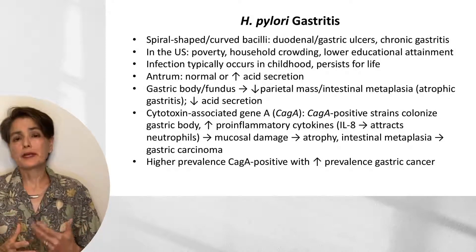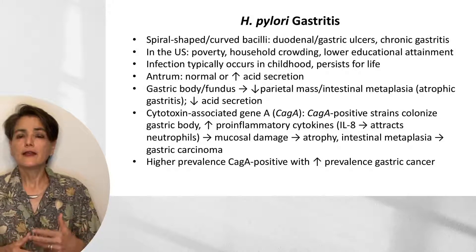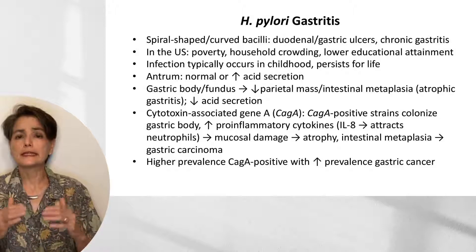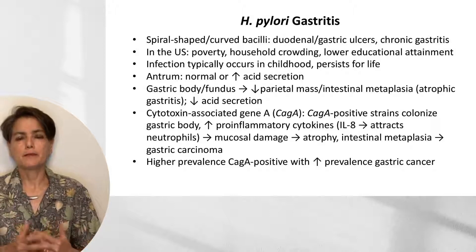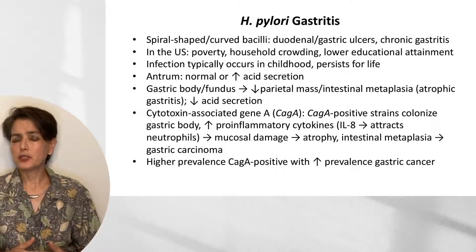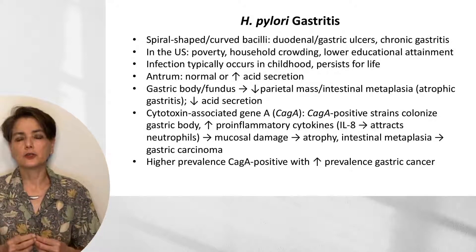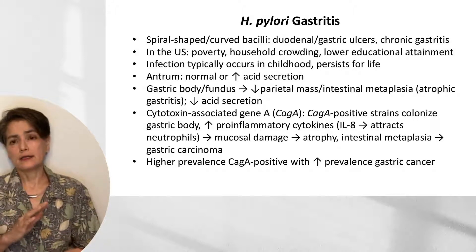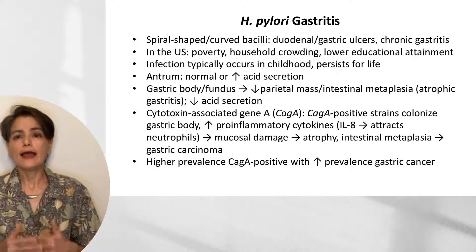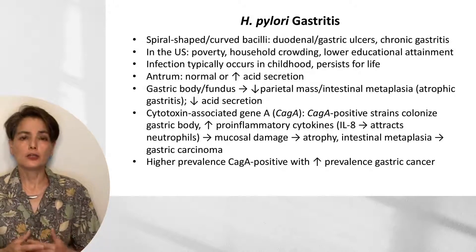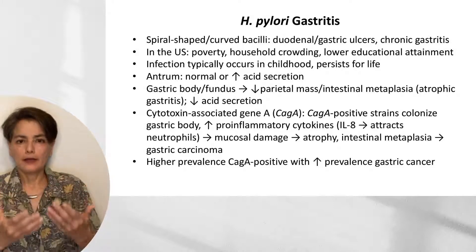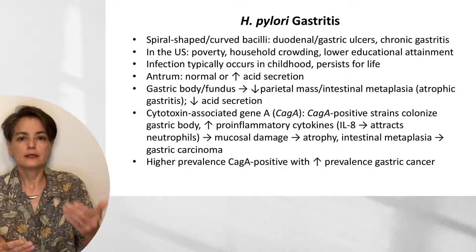If this progresses and becomes chronic, involving the gastric body and fundus, this injury causes loss of parietal cells with a concomitant decrease in acid secretion. With continued injury and repair, we get intestinal metaplasia. This constellation of findings is referred to as atrophic gastritis. Another pathologic feature to keep in mind is cytotoxin-associated gene A, or CAG-A. These strains can be CAG-A positive or negative, and the CAG-A positive strains have a higher tendency to colonize the gastric body and to secrete pro-inflammatory cytokines such as IL-8, attracting neutrophils and leading to mucosal damage, atrophic gastritis, metaplasia, dysplasia, and gastric carcinoma.